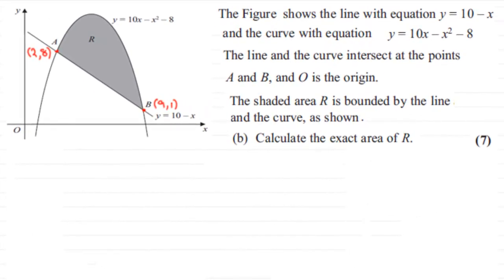Hi, now in this last part of the question what we've got to do is find the shaded area R which is bounded by the line and the curve, and we've got to calculate the exact value of that area R.